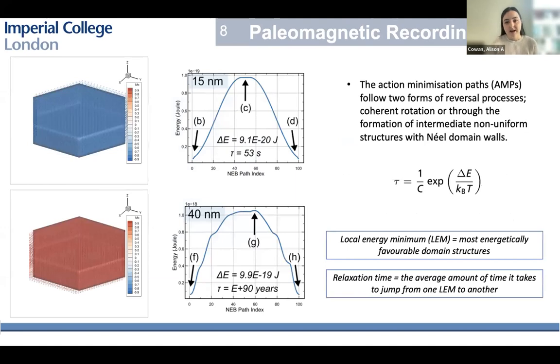Next was to look at the recording stability, which is your nudged elastic band algorithm. This helps us calculate the energy barriers between two lowest energy minimum states. So I've got two examples here. The top is 15 nanometers, and the bottom is a 40 nanometer particle. We're seeing two different processes here. The top one is just your coherent rotation of the magnetization within the plane, and we're seeing quite a small energy barrier here, which results in a relaxation time of 53 seconds, which is obviously very small. If we compare this to our 40 nanometer particle, we're seeing a different process where it's the formation of your Néel wall that sweeps through as the magnetization direction is switched. What we're seeing here is quite a big jump. The energy barrier is significantly larger, and the relaxation time has now jumped to 10 to the 90 years, which is a huge jump from a difference of 25 nanometers in particle size.